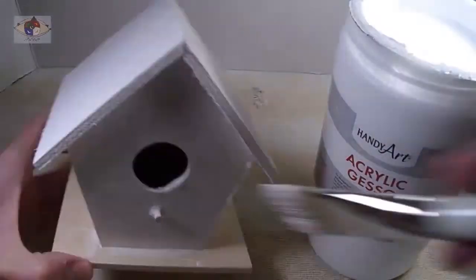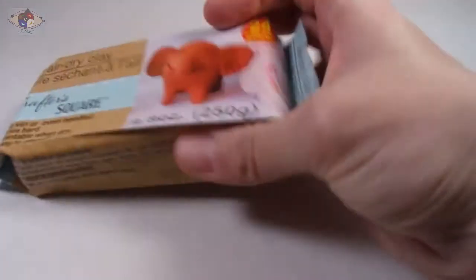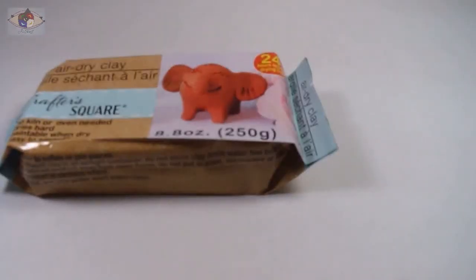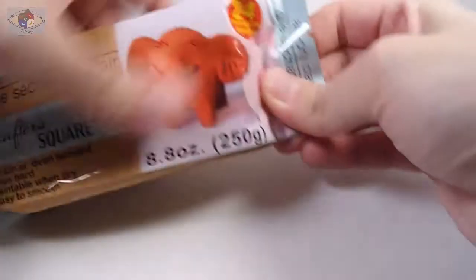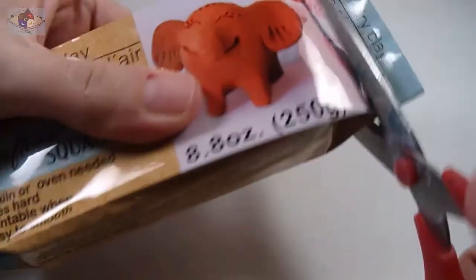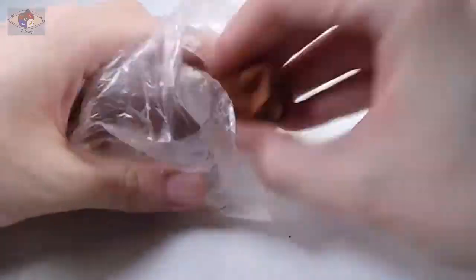Of course, maybe the fact I'm filming it at the same time and have a camera sitting in front of me is what I'm doing. Okay, now I'm going to be using this air-dry clay I got from the Dollar Tree to make a little cat that I'm going to put on. Because what's a Halloween house without that black cat?